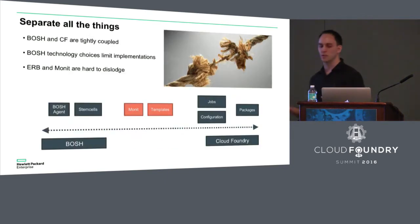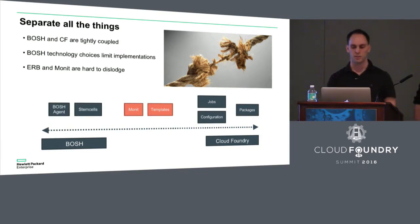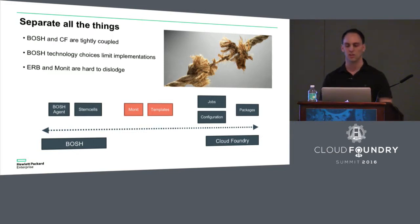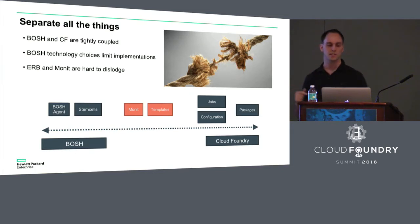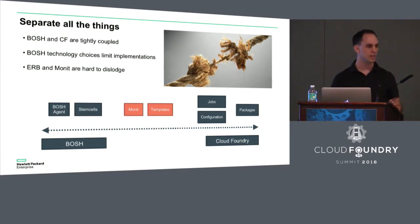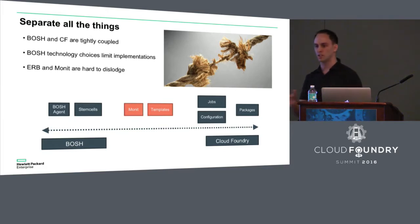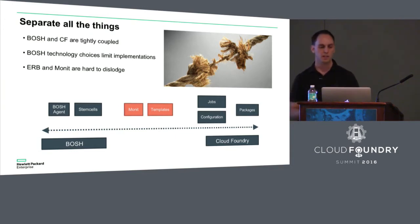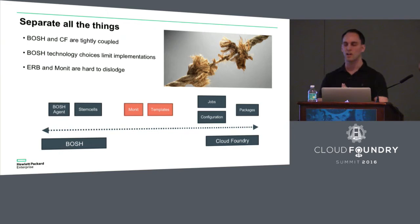In order to separate all the things, the first thing we had to realize is that BOSH and CF are a little bit more tightly coupled than we first had imagined. BOSH technology choices also kind of limit the implementations we could do. If you look at the diagram, on the left-hand side we've got the BOSH agents, stem cells, all the BOSH-related things. On the right side, you've got jobs, configurations, packages — all in the Cloud Foundry land. But kind of in the middle, where these things come together, we've got Monit and these ERB templates, and these things are a lot harder to deal with.